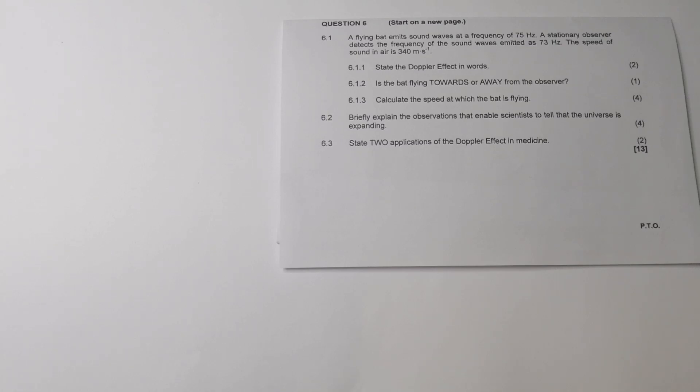It says it's the change in frequency or pitch of the sound detected by a listener because the sound source and the listener have different velocities relative to the medium of sound propagation. Sounds like a mouthful. But please just make sure that you get those definitions right. Those are free marks. And so that you can obviously score and collect as many marks as possible.